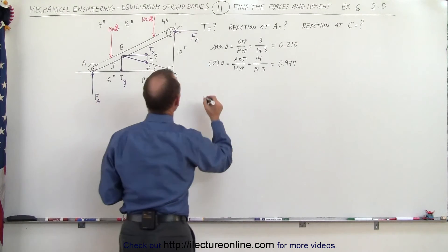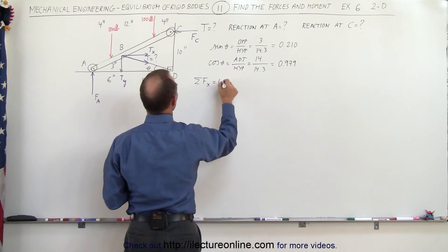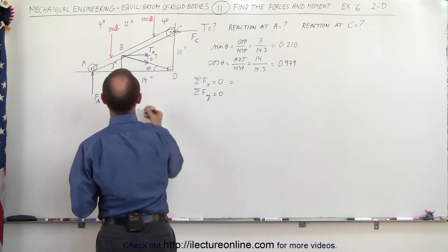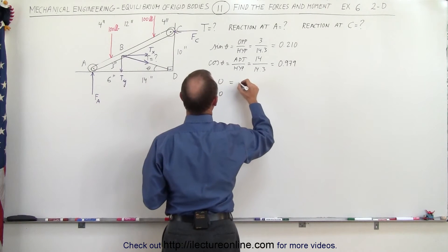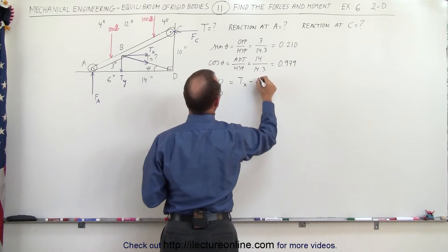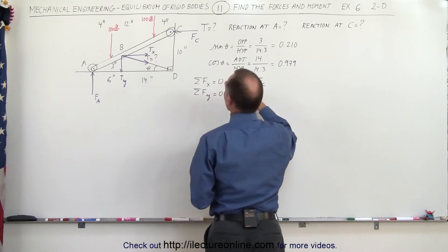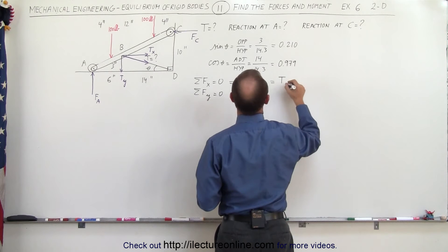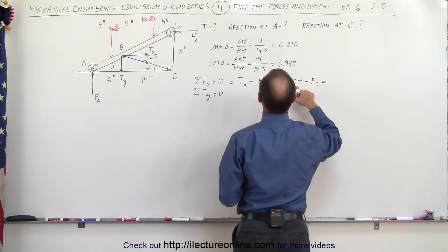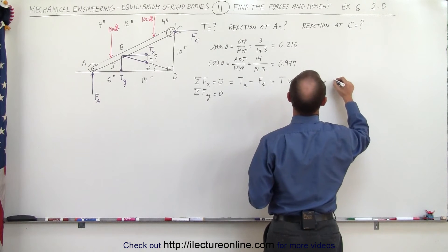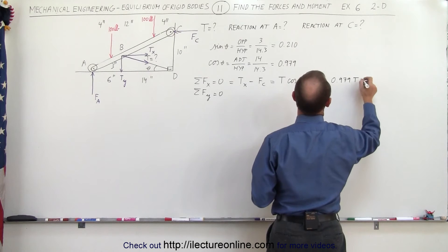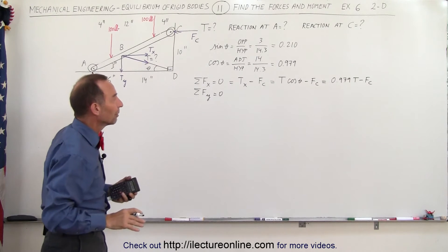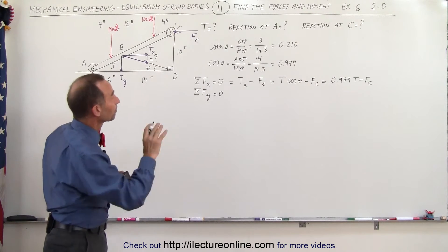Let's set the sum of all forces in the x-direction equal to zero, and the sum of all forces in the y-direction equal to zero. In the x-direction, we have T sub X to the right minus F sub C. T sub X can be written as T times cosine of theta, so: 0 = 0.979 T minus F sub C. Notice there are two unknowns in that equation, both the tension T and F sub C.